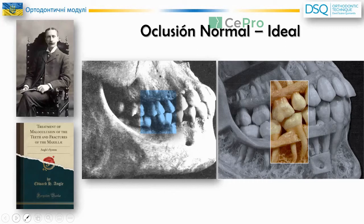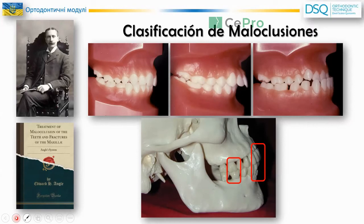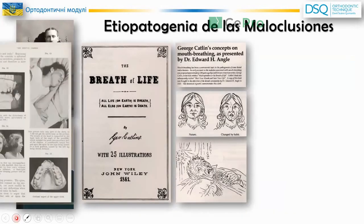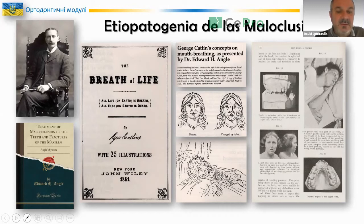First of all, Dr. Angle was the father of modern orthodontics. Angle defined ideal occlusion and defined a very simple classification of malocclusion. He also described the relationship between breathing and the orthodontic development of the face — which is very relevant today given the fashion of sleep apnea problems and their relationship to orthodontic issues.